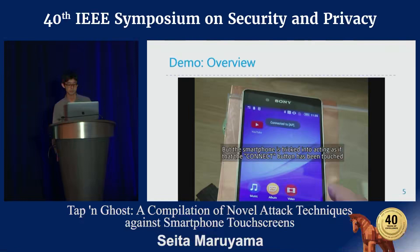We implemented the ghost touch generator and tried to attack seven smartphone models. As a result, we succeeded in causing false touch events in five out of the seven models. However, we also found that the noise frequency required to cause this malfunction varies by smartphone model. To mount the attack, the attacker needs to identify the victim's smartphone model in advance.